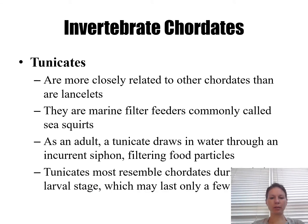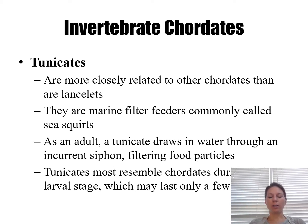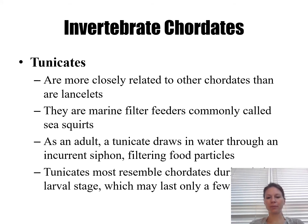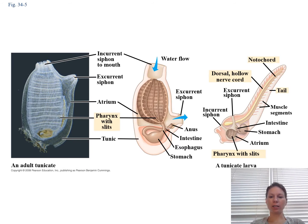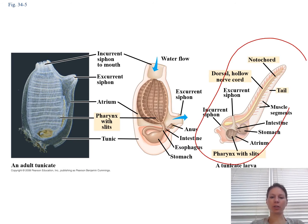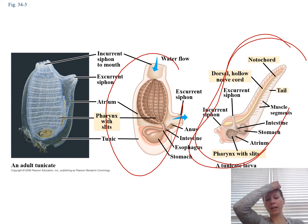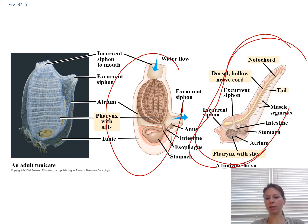Tunicates are a step up from lancelets as chordates go. They only have all the chordate traits in the larval stage. As adults, they are sessile filter-feeding organisms. In the larval stage, they have the nerve cord, notochord, tail, and pharyngeal slits — but they look completely different as an adult.